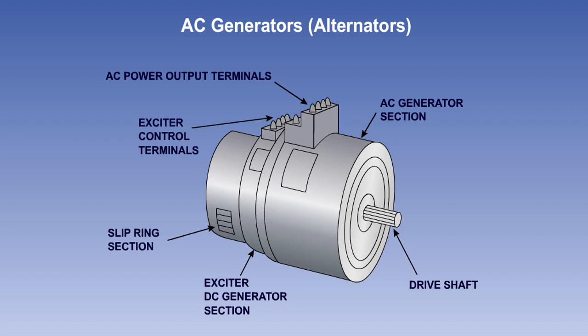Most modern aircraft use alternating current, or AC, in their primary electrical systems. The AC is supplied by an alternator, or alternators. Alternators are often referred to as AC generators, and this is the name that we will use.